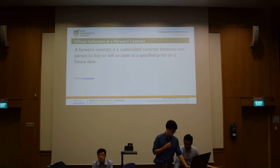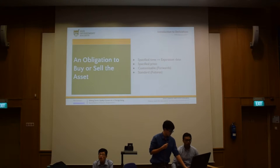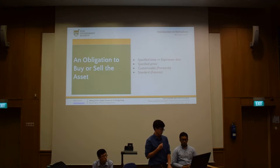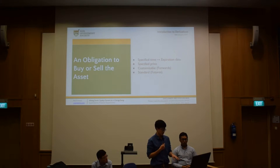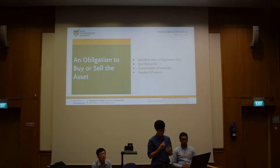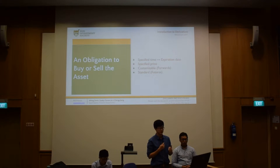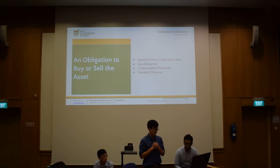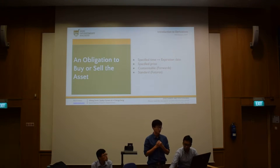A forward contract is a customized contract between two parties to buy or sell an asset at a specified price on a future date. Breaking it down: it is an obligation to buy or sell something at a specified time and specified price. Forward contracts are customizable, whereas futures contracts are standardized — we'll come back to this distinction in a moment.